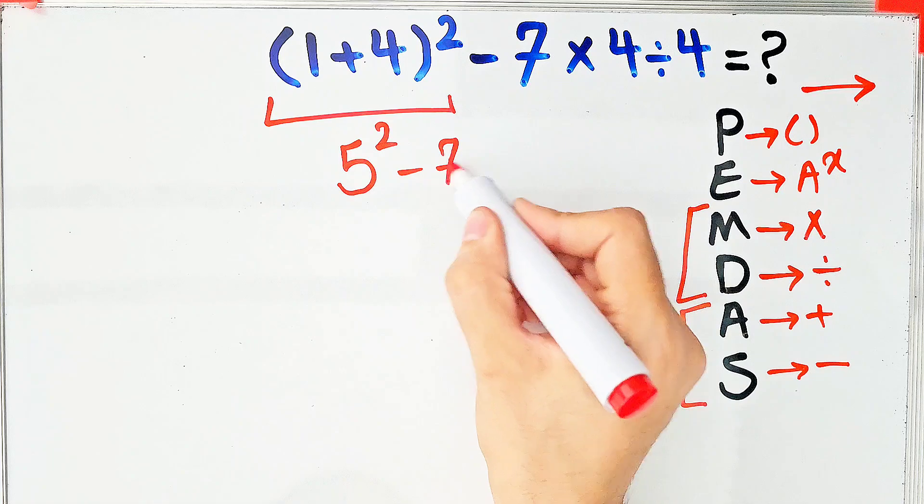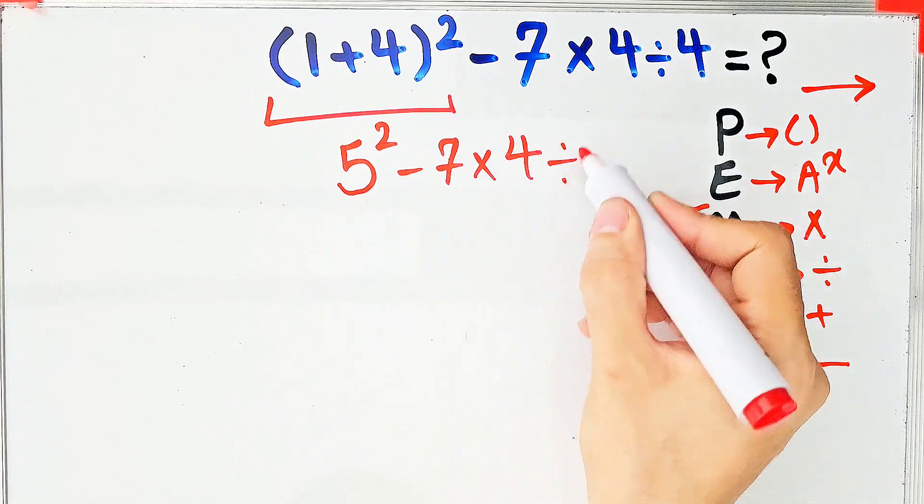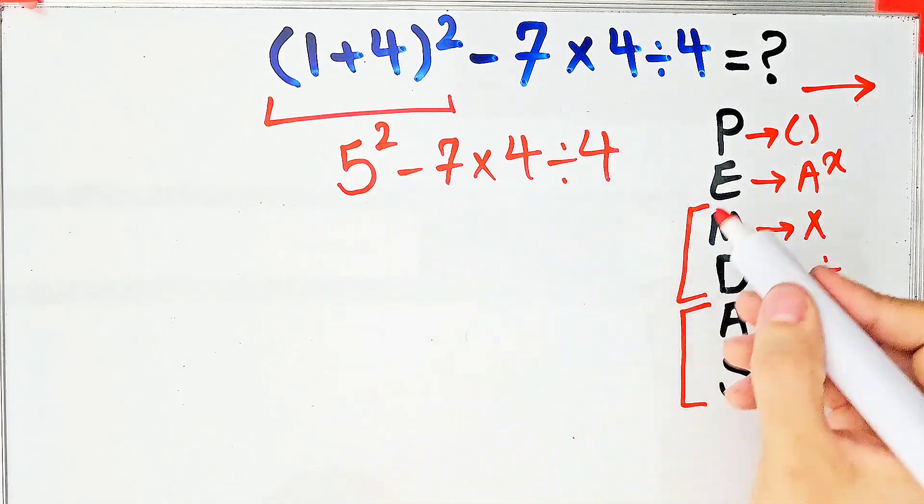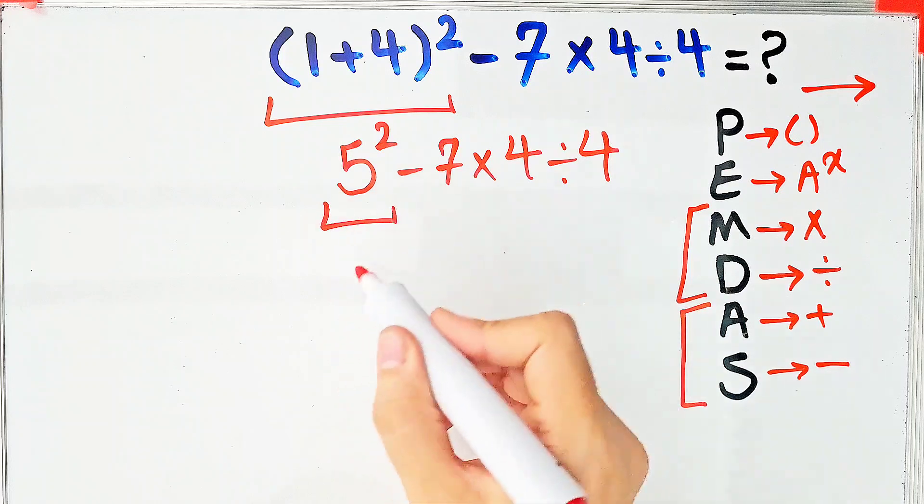In this step we simplify the exponent. Five to the power of two equals 25. 25 minus seven times four then divided by four.